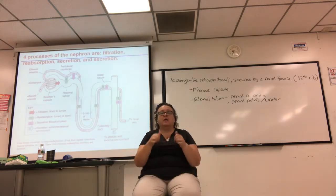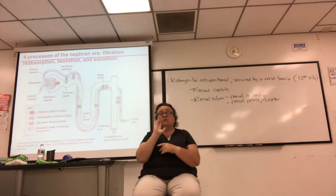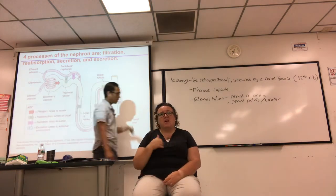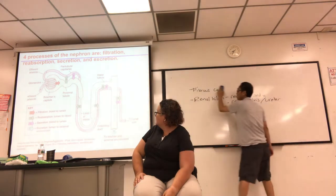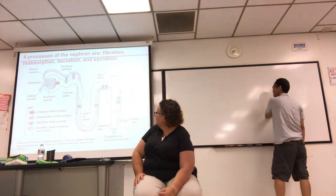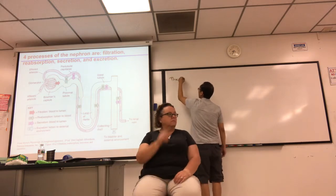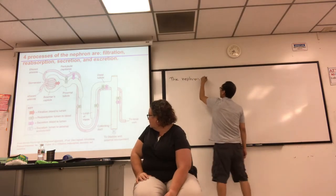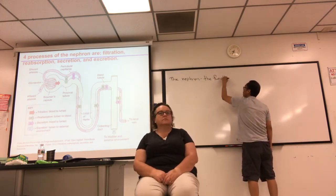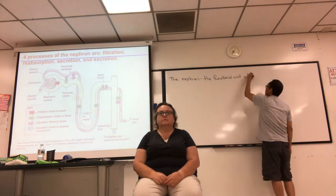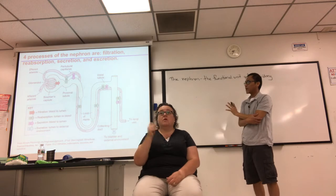Before we do that, let's look at the microscopic structure that performs all the basic functions of the kidney. The functional unit of the kidney is the nephron. You have about a million per kidney. If you understand the nephron and how it works, you basically understand how the whole kidney works.